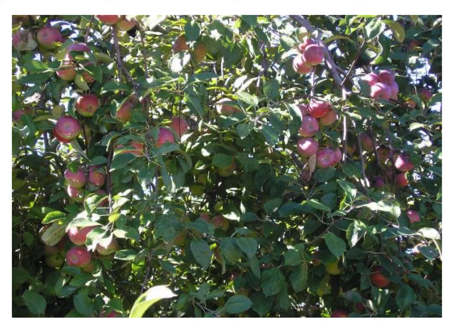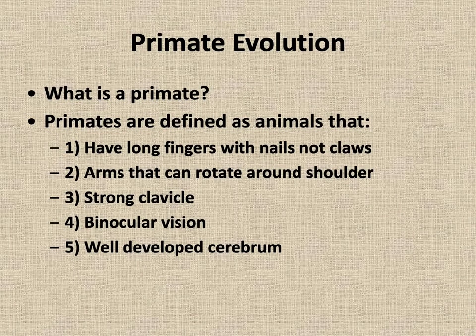Color vision is also really useful — having those extra receptors to perceive color helps us pick up on a lot of stuff. Primates mostly have well-developed cerebrums. We have this big thick head with a big brain. Not all organisms have this, but most primates have a very well-developed cerebrum.